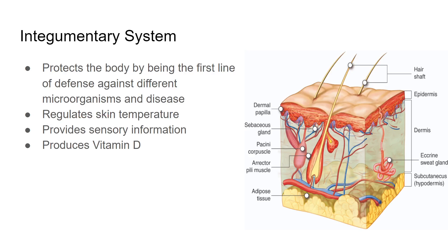it's going to start pumping more blood and trying to make you hotter. It provides sensory information — whenever you're cooking and you put your hand on the hot stove and pull it away, that's your integumentary system telling your nervous system that you shouldn't touch that. It's a little bit hot. And it also produces vitamin D — if you ever talk about going outside, you're getting that vitamin D. So that's the job of the integumentary system.